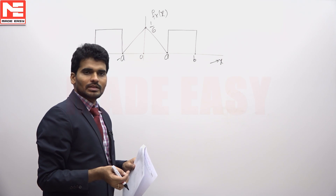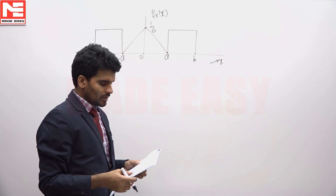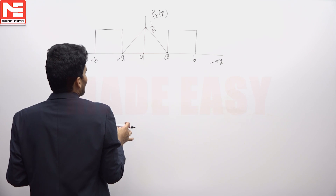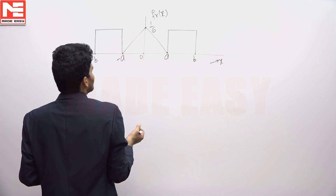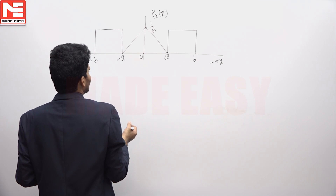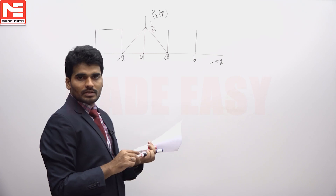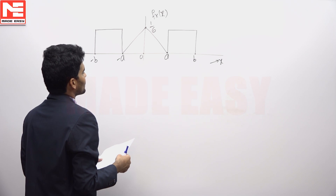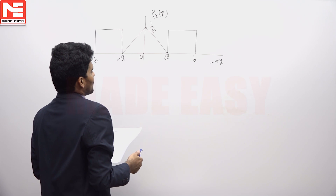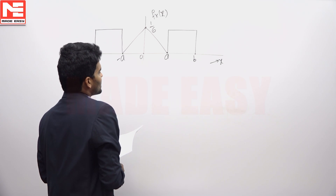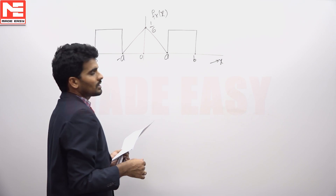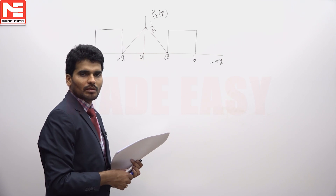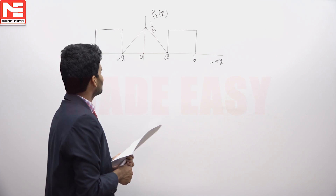When do we get maximum entropy? If probabilities are equal, we get maximum entropy. At the output of the quantizer, we get quantization voltages. So, to get the maximum entropy at the quantizer output, the resulting quantization voltages should have equal probability.